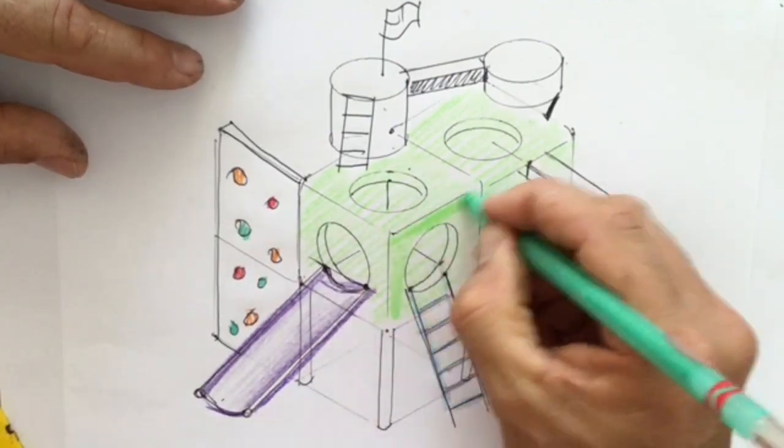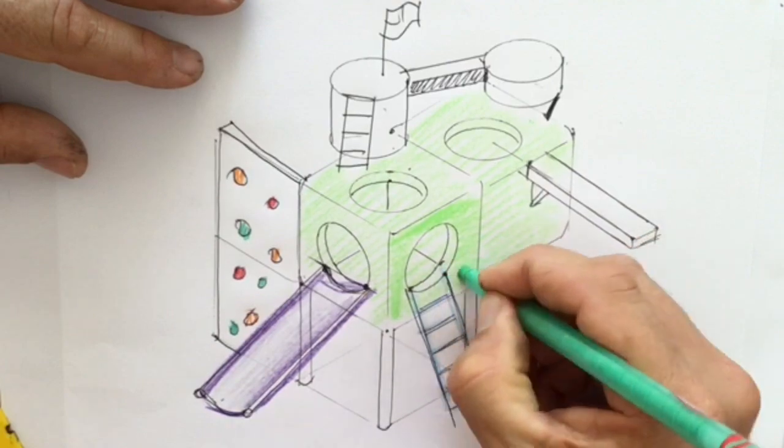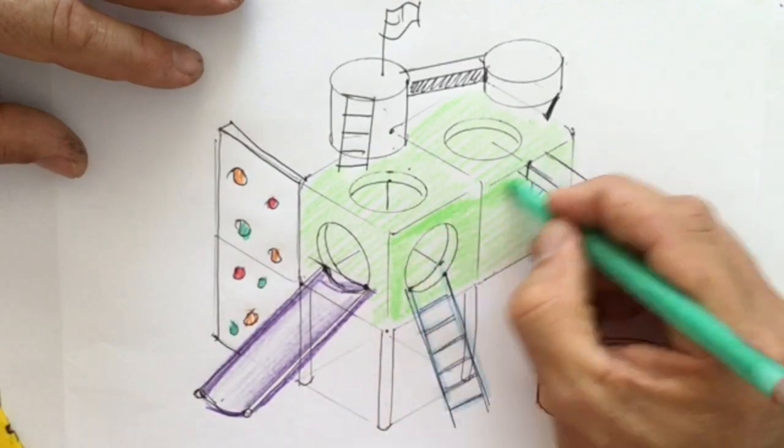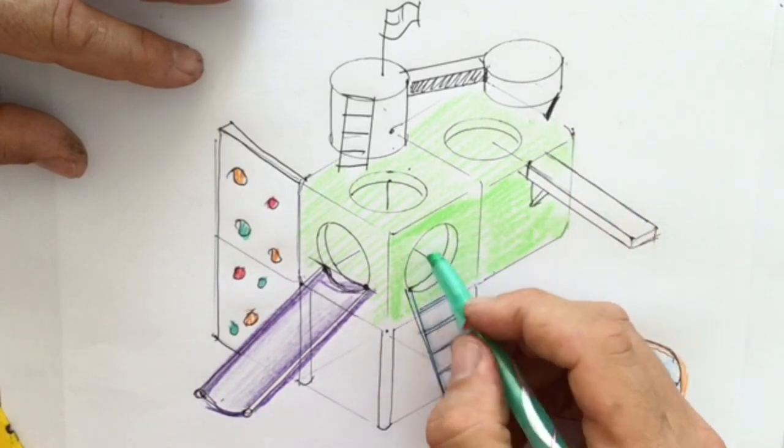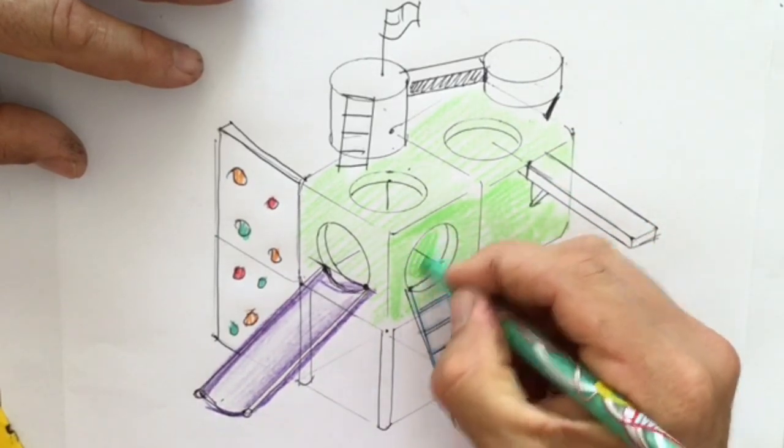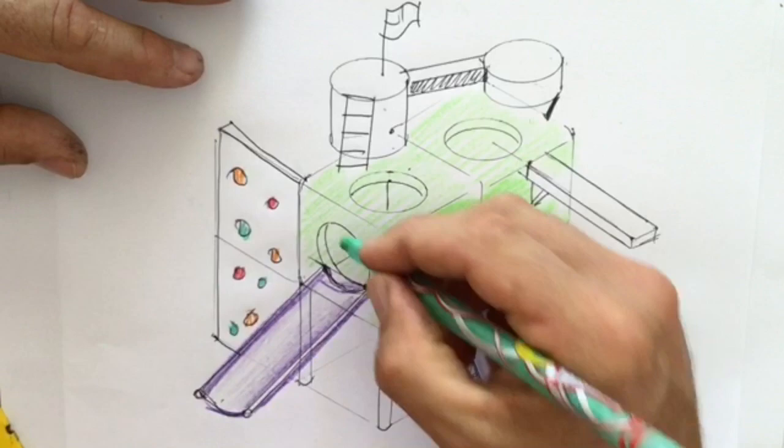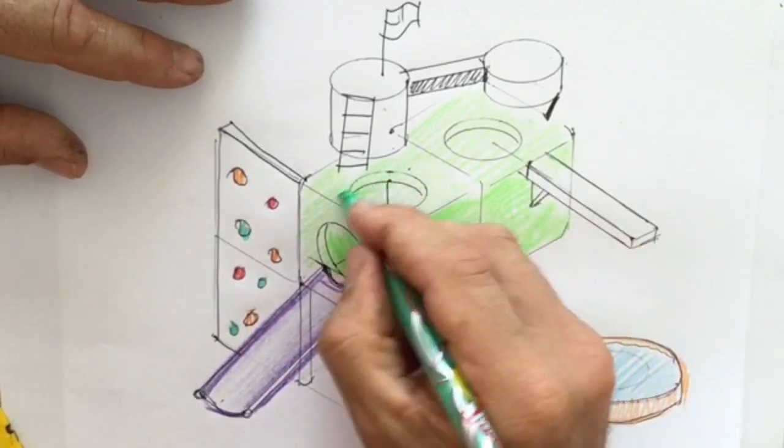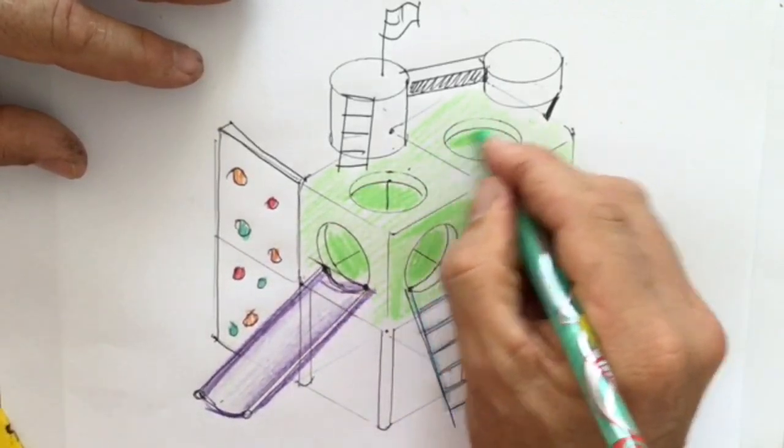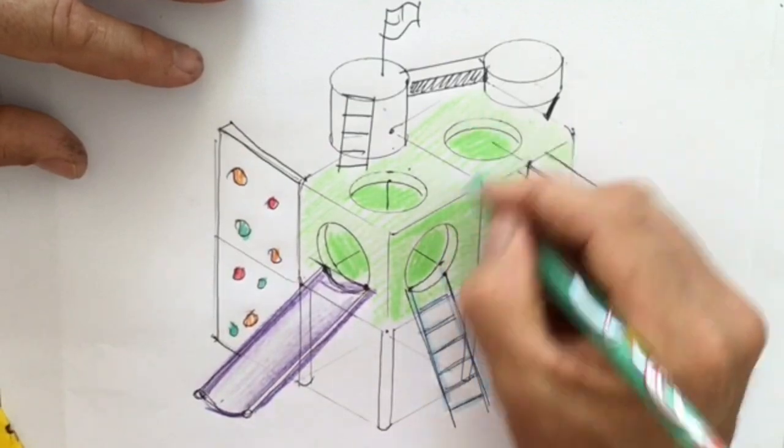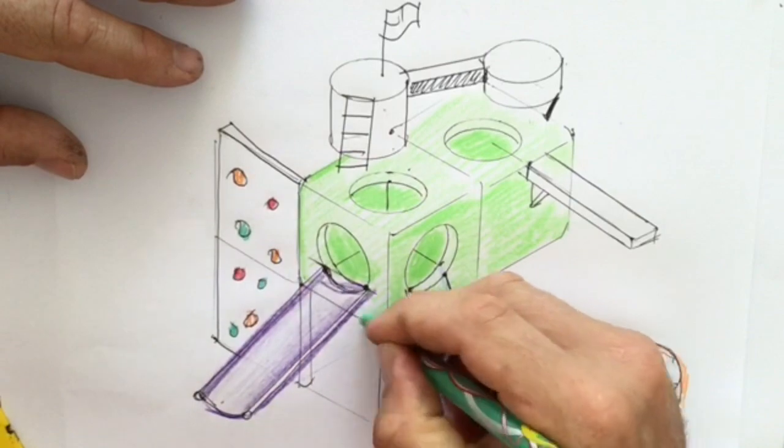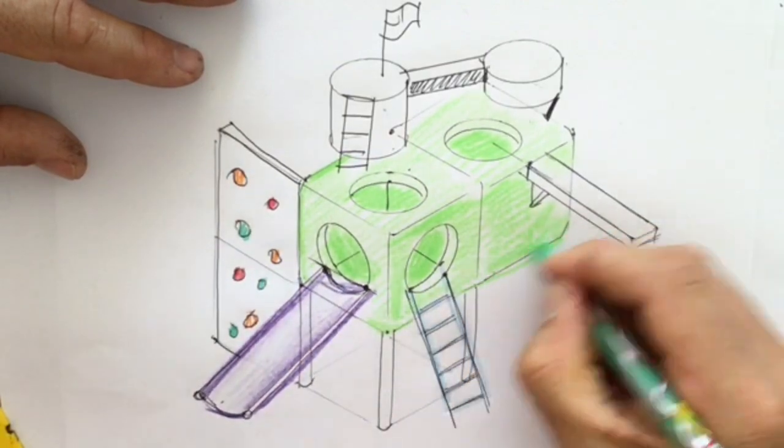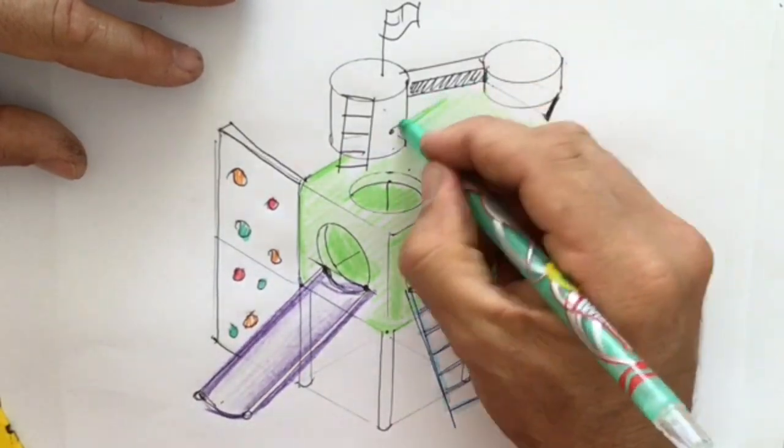So we'll darken that one in. I'm trying not to go too dark because I know inside you'll be even darker again. It helps me understand that it's a 3D shape. Don't forget your cutting line right around the outside. Helps to define the shape.